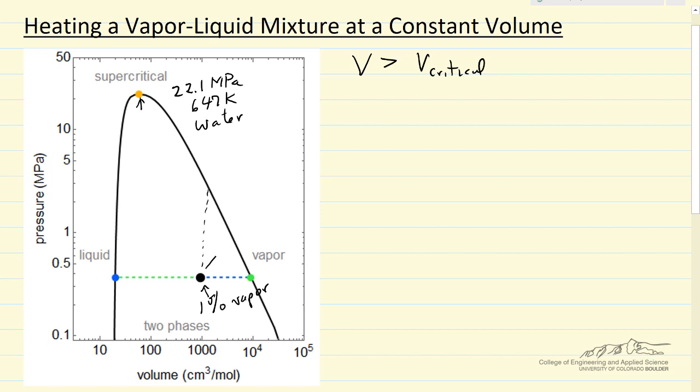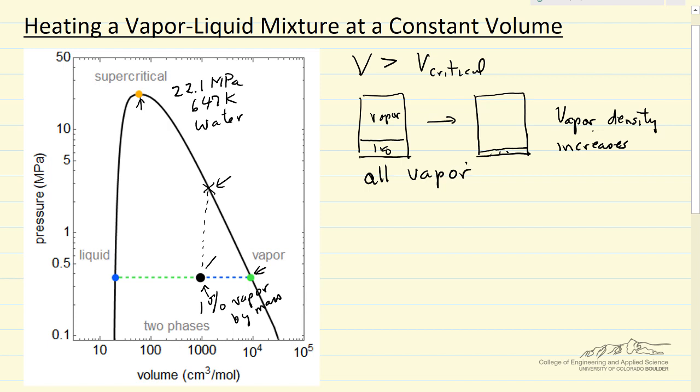If we're going to heat up at constant volume, eventually we're going to hit the saturated vapor line. The container that starts out mostly vapor and a small amount of liquid, remember 1% of the vapor, this is by mass, but by volume it's much larger. As we heat it, the container is going to have smaller and smaller amount of liquid, more vapor, but the vapor is going to be denser. So the vapor density increases, or as you can see from the diagram, the vapor specific volume changes. And so at some point, we would have all vapor.